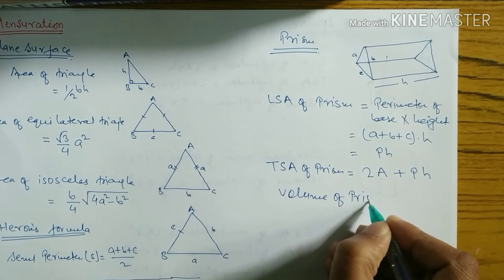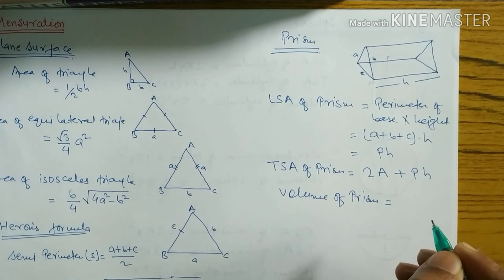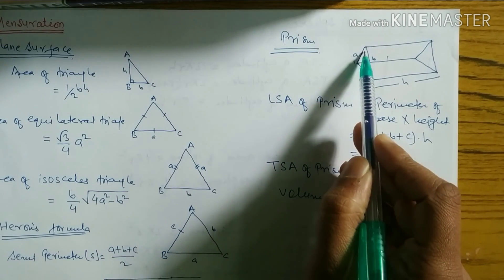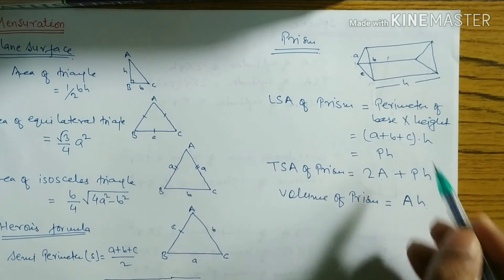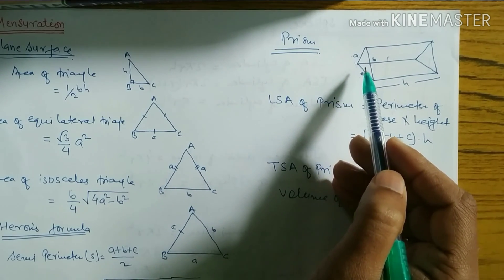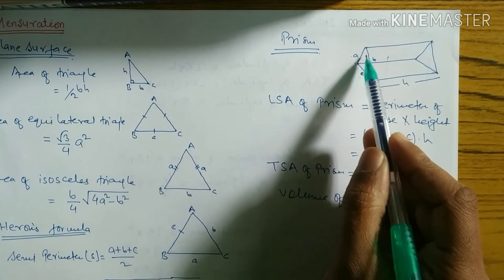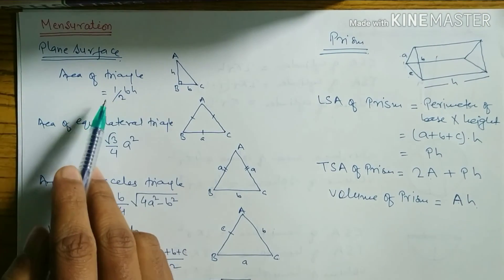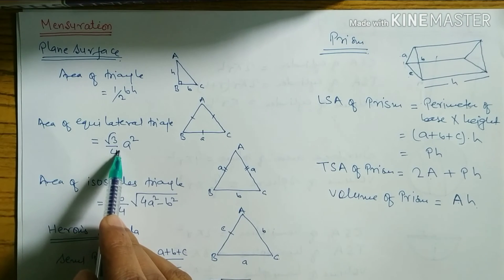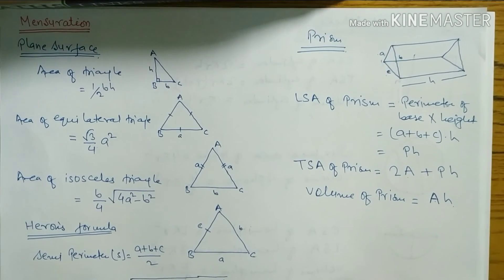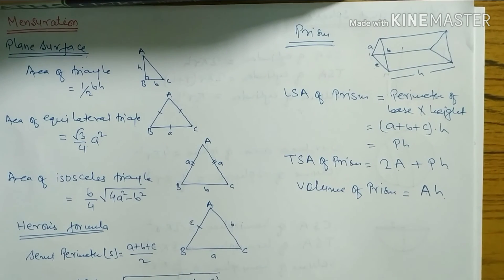The volume of prism = A × h, where A means area of base (find the area of the triangular base using the appropriate triangle formula — equilateral, isosceles, right angle, or scalene) and h means height of the prism. So we have three formulas from prism: lateral surface area, total surface area, and volume.